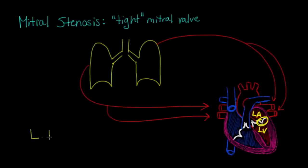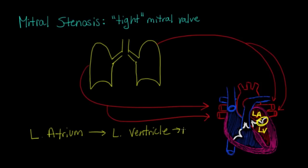The progression of blood is: left atrium to left ventricle, out the aorta, and to the rest of the body. That blood into the left atrium, as we just said, comes from the lungs. Now, if blood can't get from the left atrium to the left ventricle, it is going to back up in the left atrium and the lungs — everything that was before it.